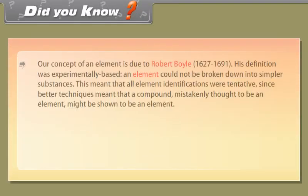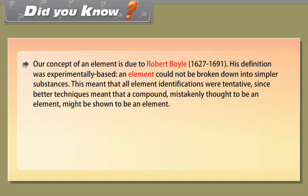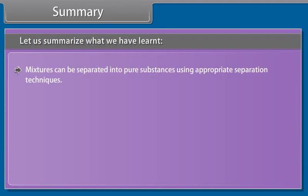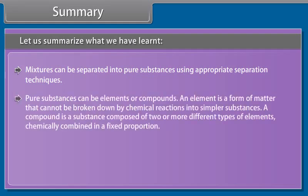Did you know? Our concept of an element is due to Robert Boyle, 1627-1691. His definition was experimentally based and an element could not be broken down into simpler substances. This meant that all element identifications were tentative since better techniques meant that a compound mistakenly thought to be an element might be shown to be a compound. Another important idea at that time was the immutability of atoms. An atom of copper has always been copper and always will be copper. Nothing can change that. This idea has been shown to be wrong by the modern discoveries of radioactivity, fission, and fusion.